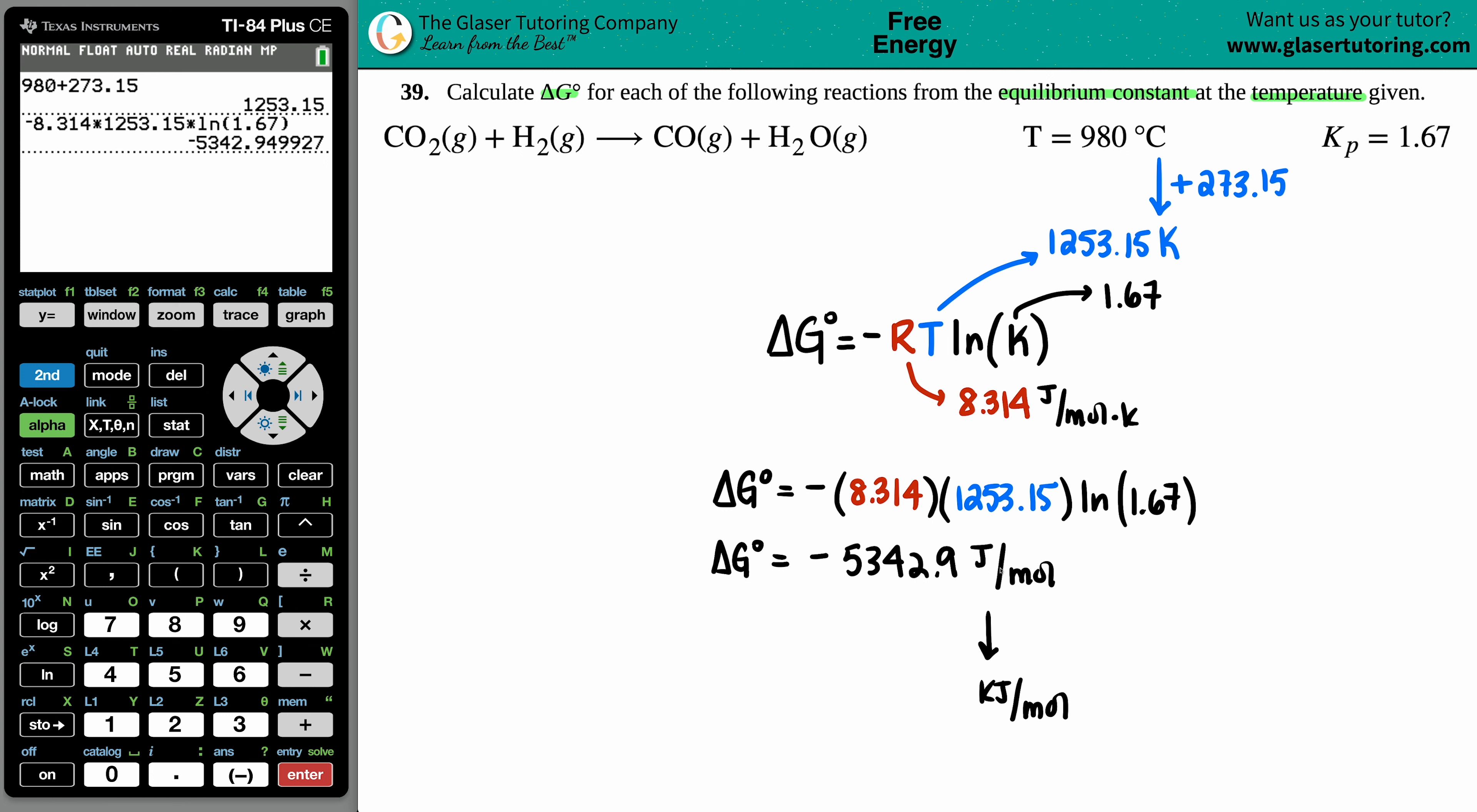Generally ΔG values, since these are so big, usually you will see ΔG in kilojoules per mole. It's easy to convert from joules to kilojoules - all we do is divide by 1000, or move the decimal over to the left three spots. I'm just going to divide by 1000.